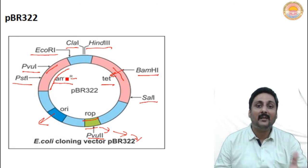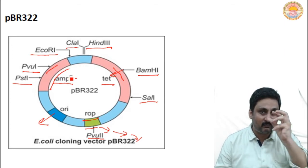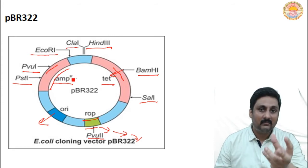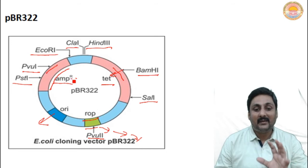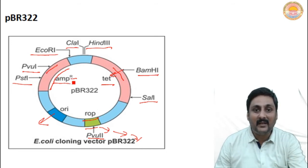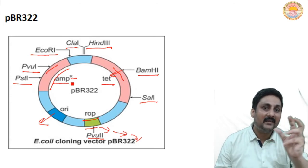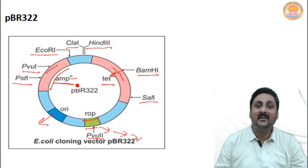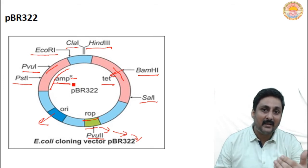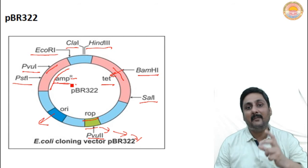Many times when we try to send the vector inside the host, it does not enter — only in rare cases does it go in. So how will we know? Place the host organism in an ampicillin antibiotic solution. If the host is growing in the ampicillin antibiotic solution, it means the vector you were trying to send has reached inside, because only the vector contains the ampicillin resistant gene. The ampicillin resistant gene will first make mRNA, then make an ampicillin resistant protein that will allow the host to survive in the ampicillin antibiotic solution.